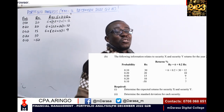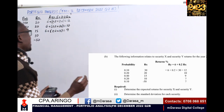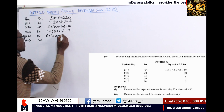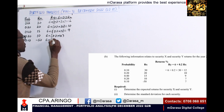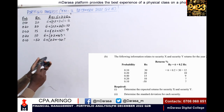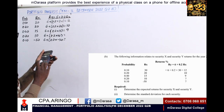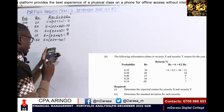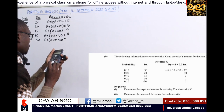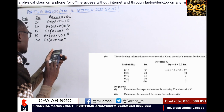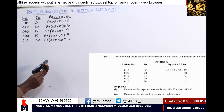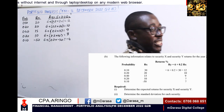For the question mark entries, we calculate: 6 plus 0.2 times 10 gives us 8, and 6 plus 0.2 times negative 50 gives us negative 4. So we have now determined the full return series for security Y: 12, 10, 9, 8, and negative 4.